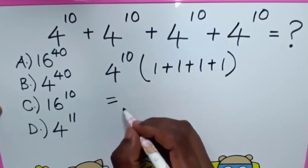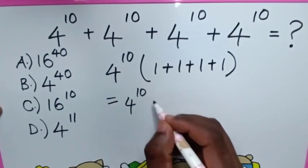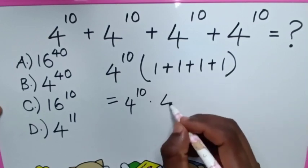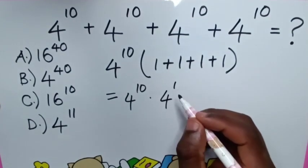Then it will be equal to 4 power of 10 times 1 plus 1 plus 1 plus 1, which is 4. Then this 4 is the same as 4 power of 1.